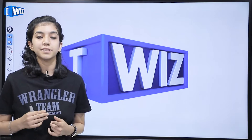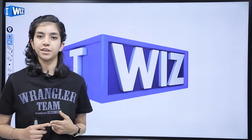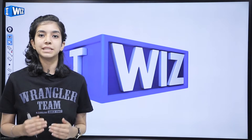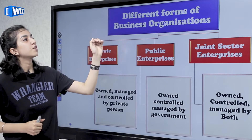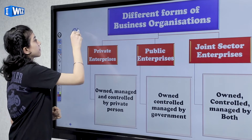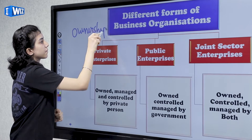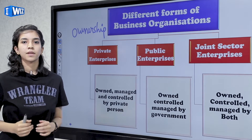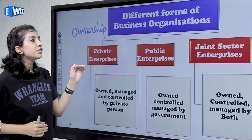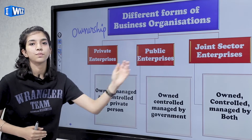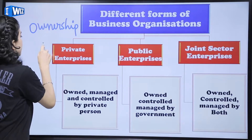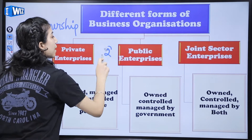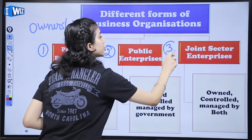Now, the fact is that every business is not the same — har koi apna business ek tarike se nahi chalata. There is a difference in the way it is controlled and managed. So today, we are going to look into these varieties. We have different forms of business organizations. These differences exist because of differences in ownership.